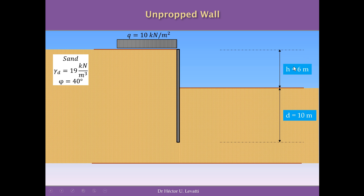In this case, H is equal to 6 meters, and the distance that this wall is inserted in the ground is 10 meters. The load Q on the ground to the left side of the wall is 10 kN per square meter. The soil is sand with a dry unit weight of 19 kN per cubic meter and an angle of internal friction of 40 degrees.